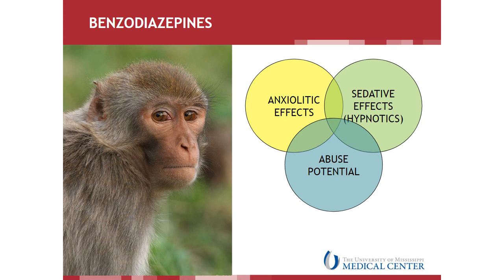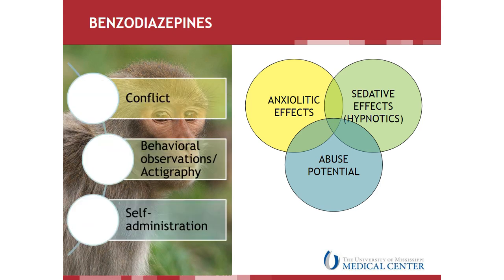A lot of the work I'll be showing here today is from the laboratory of my mentor Dr. James Rowlett. In non-human primates, the anxiolytic effects of benzodiazepines can be measured using the conflict procedure, the sedative effects can be measured using quantitative behavioral observations or actigraphy, and the abuse potential or reinforcing effects can be investigated using drug self-administration models. Today I will go over all of these models and show you data from our laboratory with conventional or non-selective benzodiazepines, so you can become familiar with the main behavioral models used to investigate the behavioral effects of these drugs in rhesus monkeys.